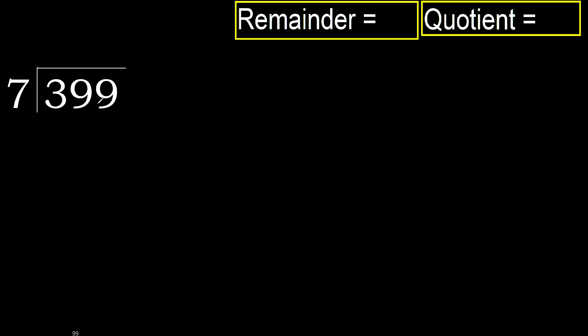399 divided by 7. 3 is less, therefore next. 39 is not less, therefore we work with 39.